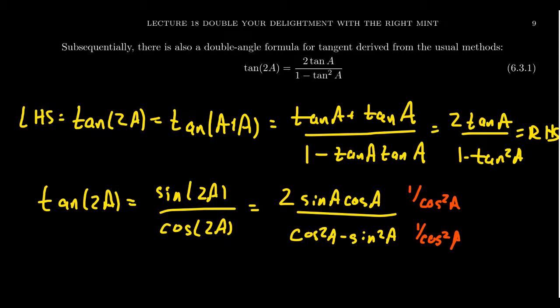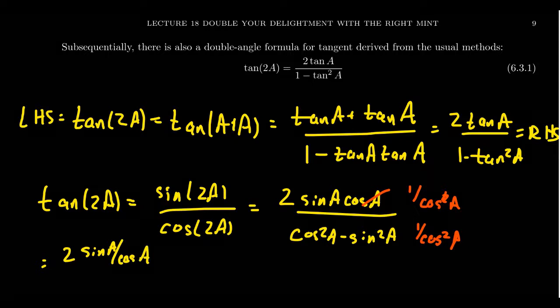If we do that, in the numerator you see there's going to be a cosine that cancels out. Then you're left with a cosine in the numerator. So you end up with 2 sine a over cosine a. That's great because that's a tangent.